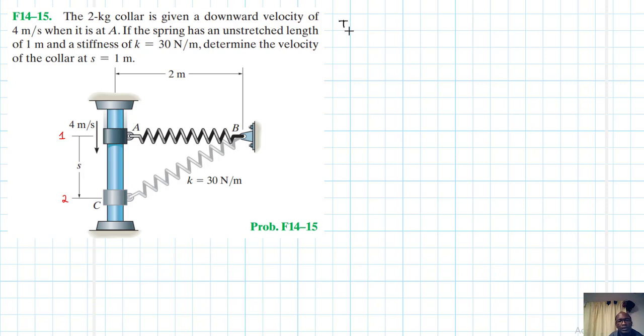So we can say kinetic energy at point 1 plus potential energy at point 1 is equal to kinetic energy at point 2 plus potential energy at point 2. So let's write down the equation.